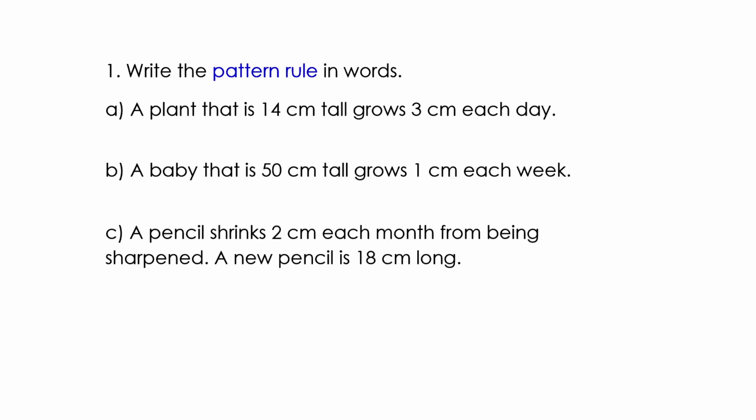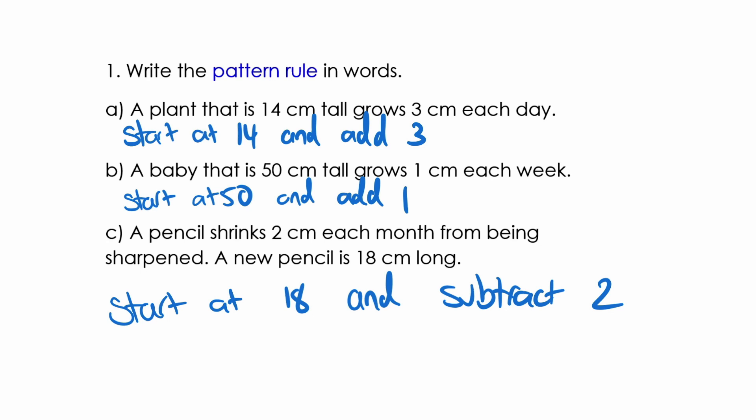So write a pattern rule in words. A plant that is 14 centimeters tall grows 3 centimeters each day. So our pattern rule would be start at 14 and add 3. The next one says a baby that is 50 centimeters tall grows 1 centimeter each week, making our pattern rule start at 50 and add 1. The last example, a pencil shrinks 2 centimeters each month from being sharpened. A new pencil is 18 centimeters long. This one's a little bit trickier because the final answer is at the end. Start at 18 and subtract 2.